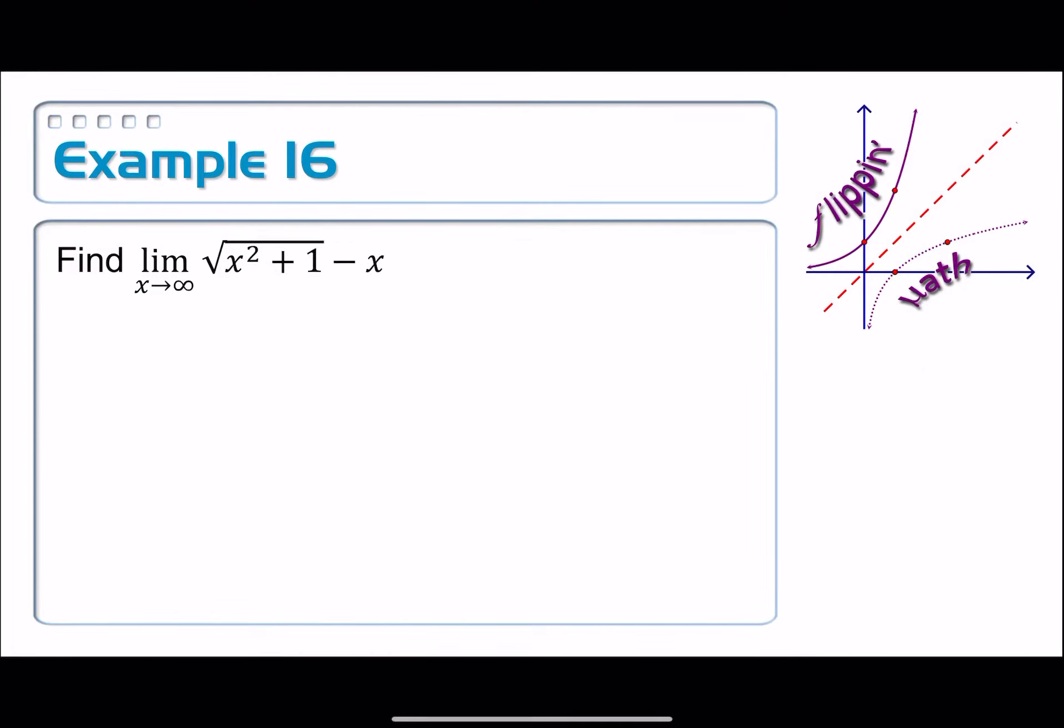We just have one more example, and we've got another limit at infinity. Limit as x approaches infinity, square root of x squared plus one minus x. What do we do first? We do a direct substitution. So I have infinity squared plus one, infinity, take square root, we have an infinity minus infinity.